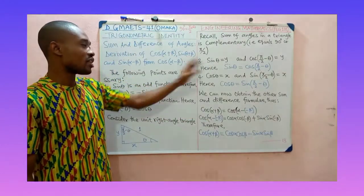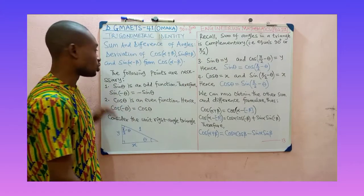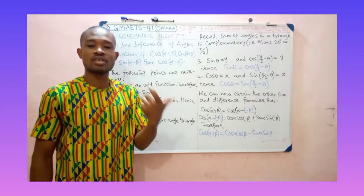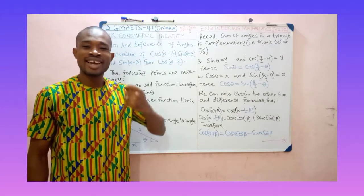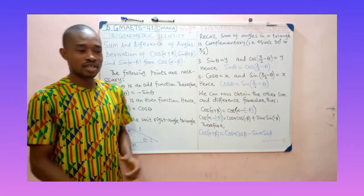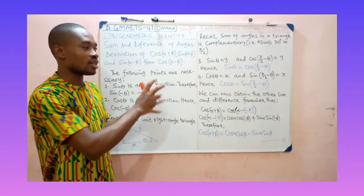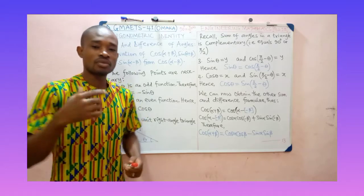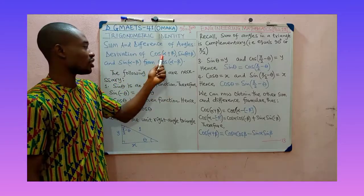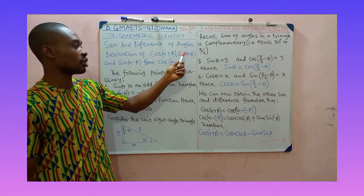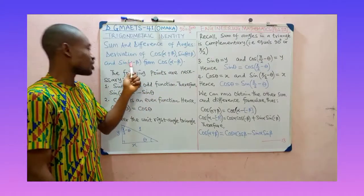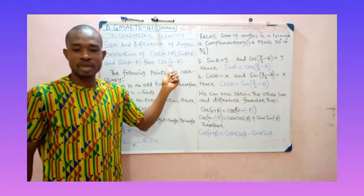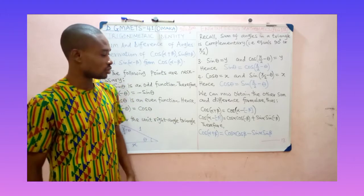These four concepts are very important: (1) sin is an odd function, (2) cos is an even function, (3) sin θ = cos(π/2 − θ), and (4) cos θ = sin(π/2 − θ). Please go through them and understand the concepts, because it is from this analysis that we can succeed in deriving cos(α+β), sin(α+β), and sin(α−β) from cos(α−β), which we have already established.